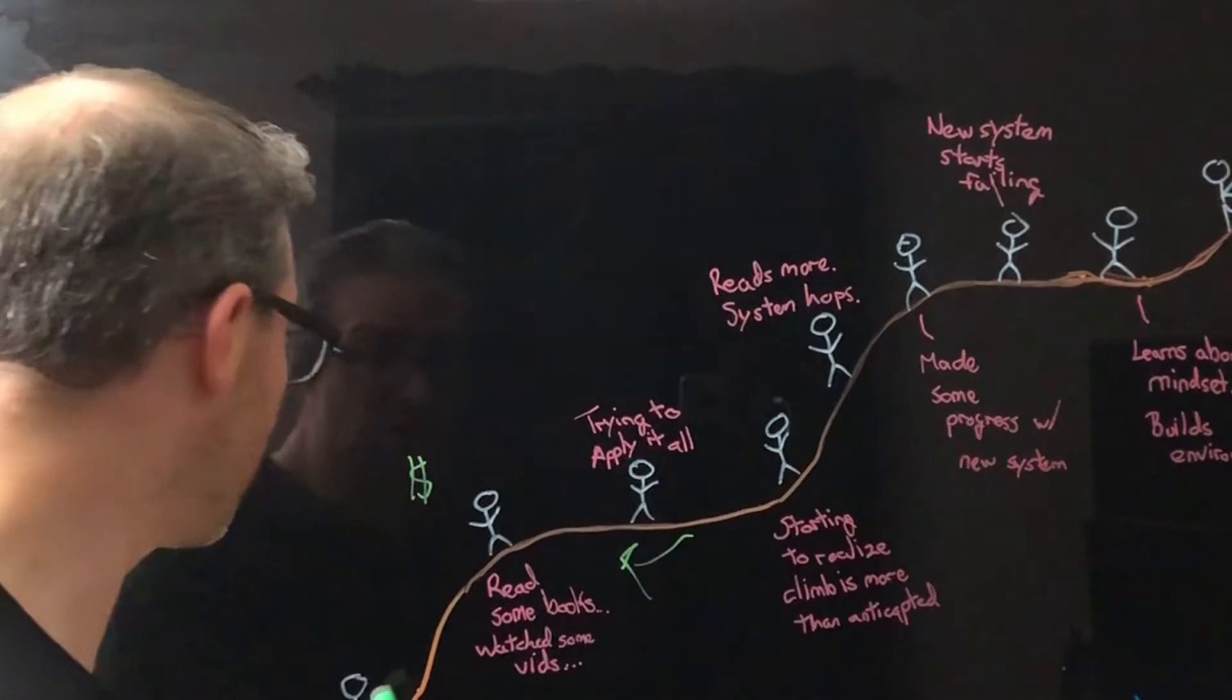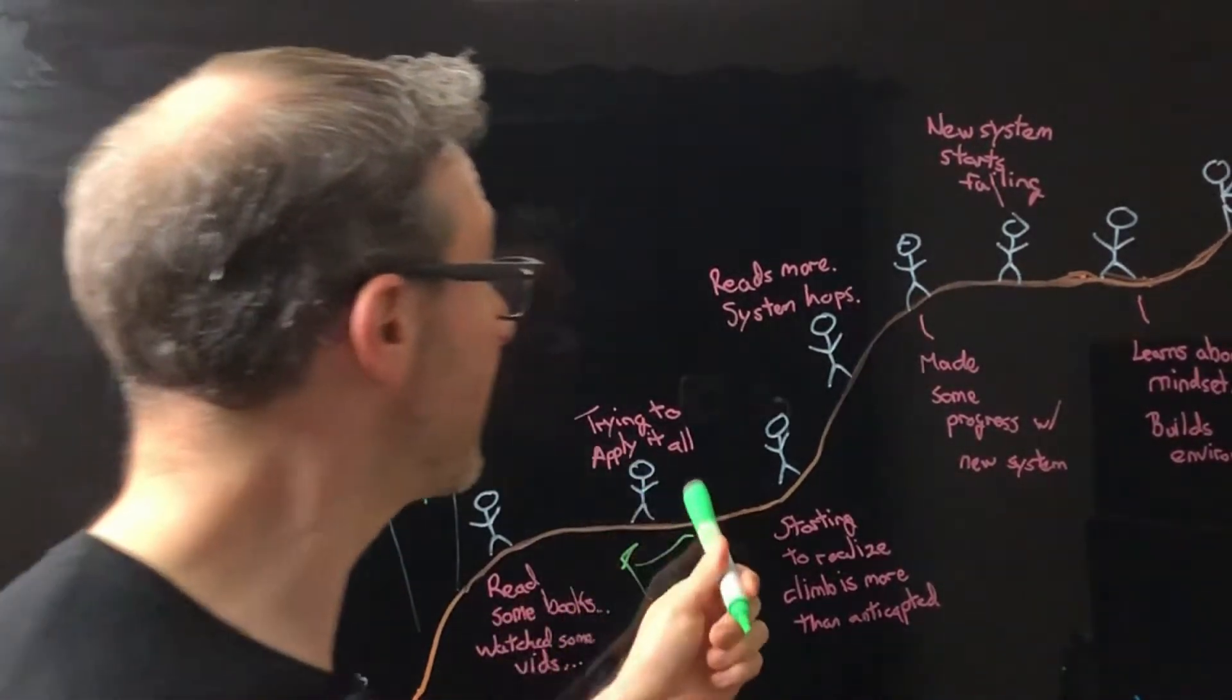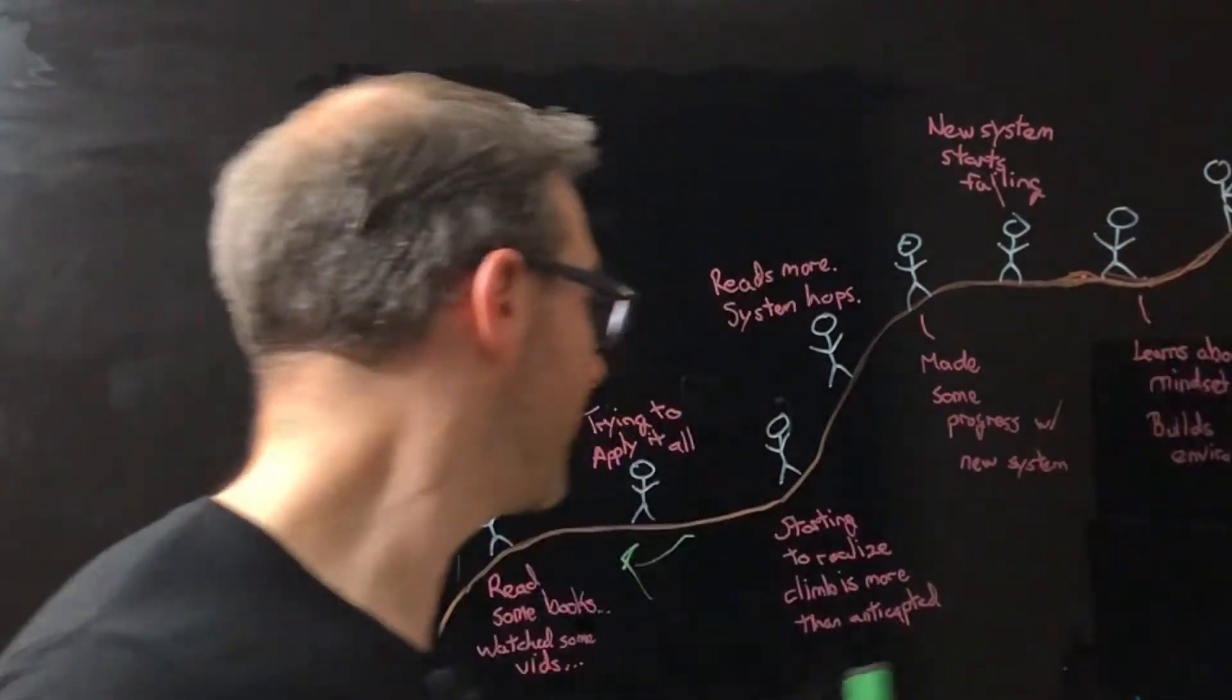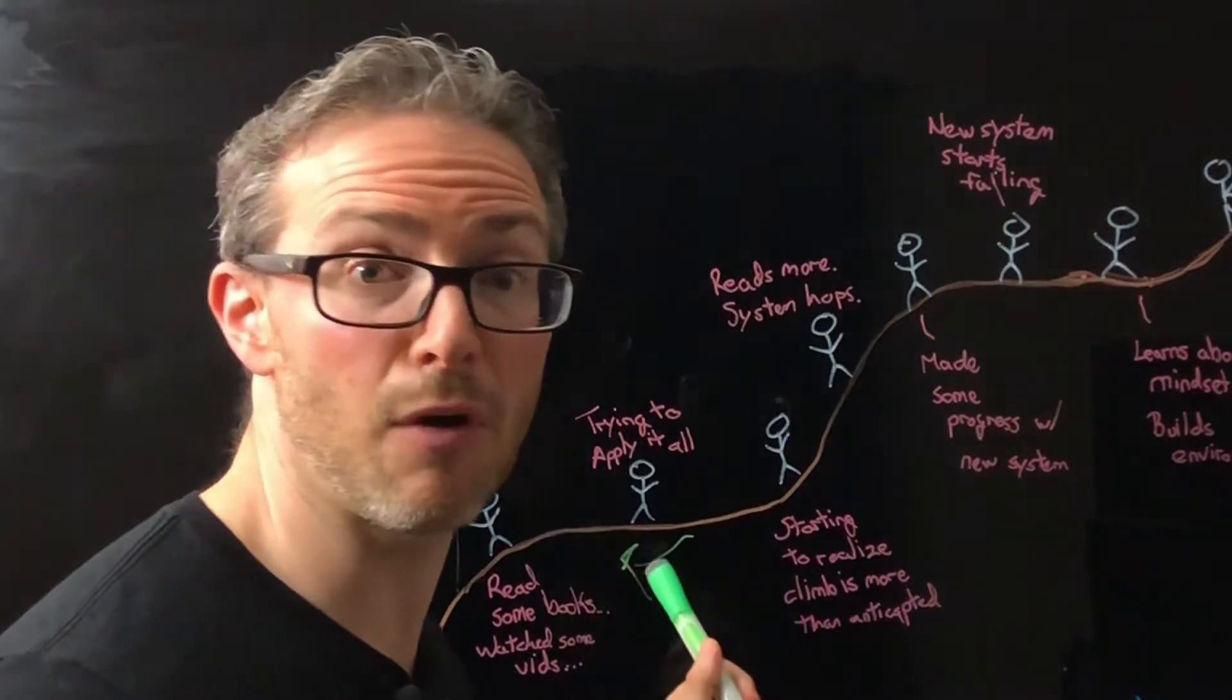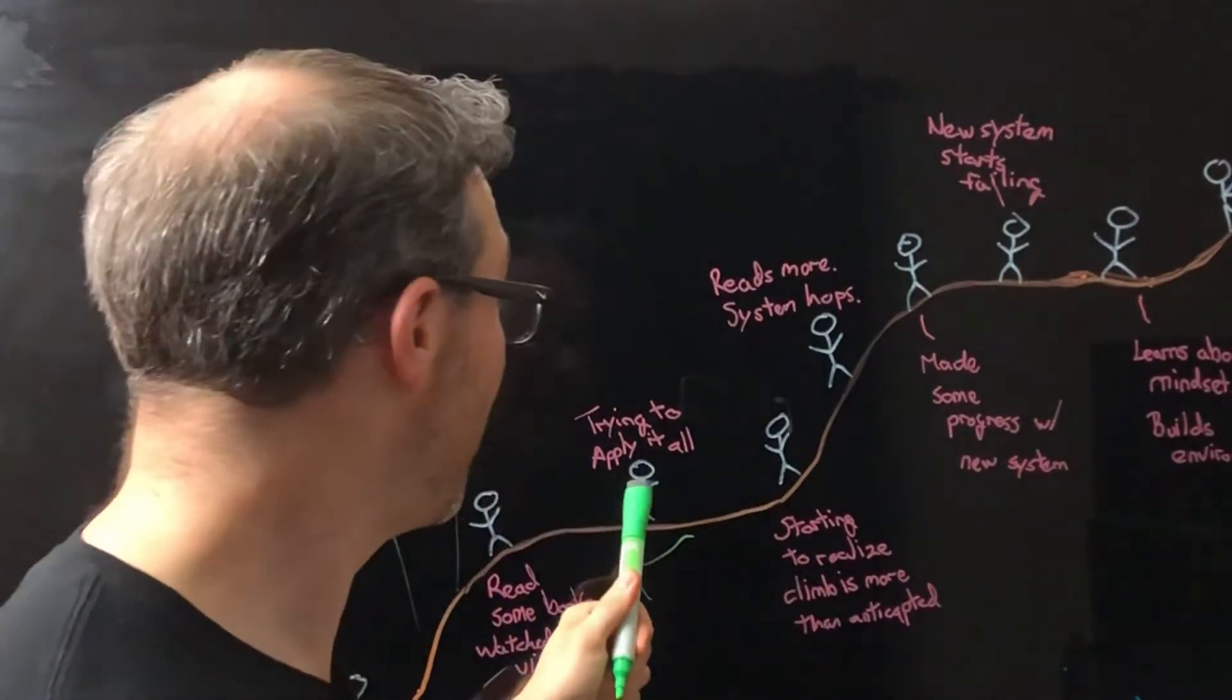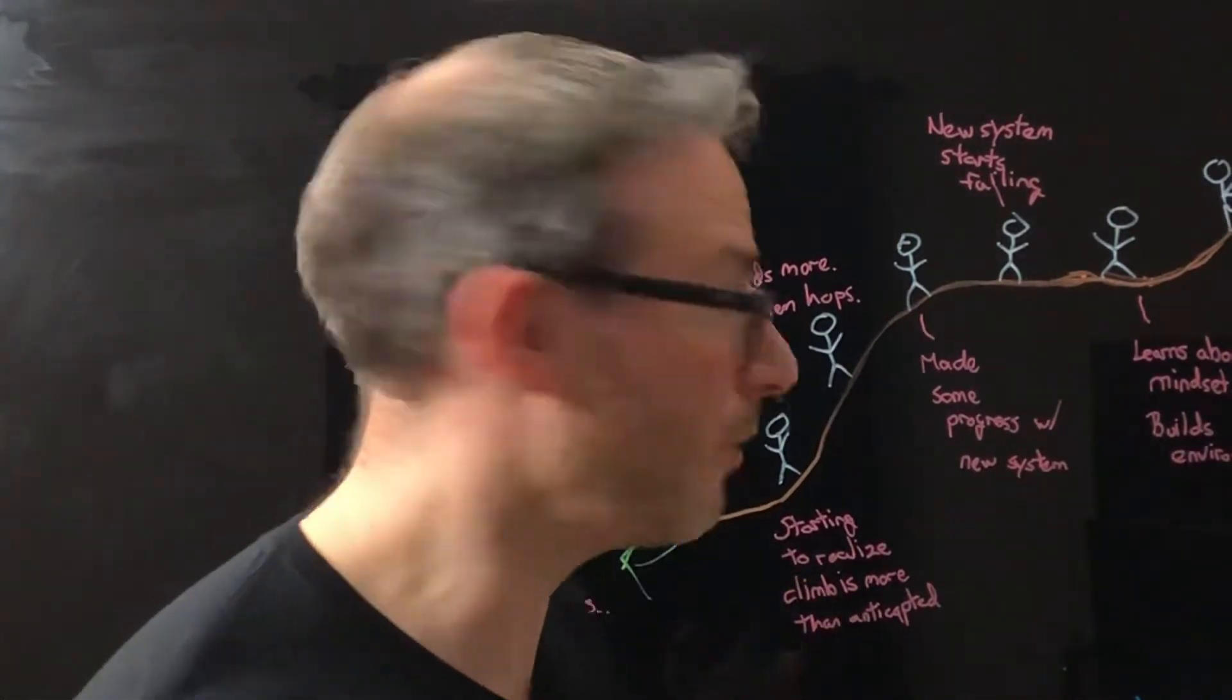They still can't see the goal. When you're down here you think that the goal is somewhere over here. When you're over here you still don't know how far the goal ultimately is. You just know that you've got further on your journey to go. You've hit this plateau and now you're starting to think this is a little harder.